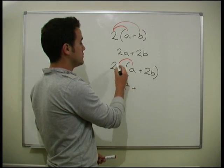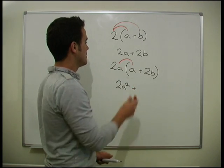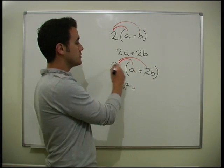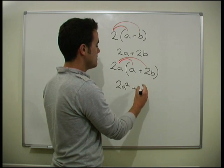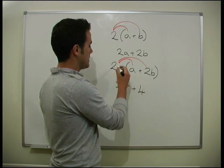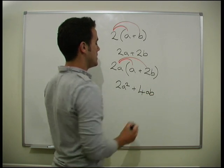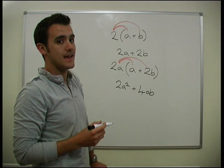And we're going to add on. So, 2a times by 2b. So, what's that going to be? Well, the 2's got to times by the 2, so we're going to get a 4. And the a's got to times by the b, so we're going to get ab. So, we have 2a squared plus 4ab.